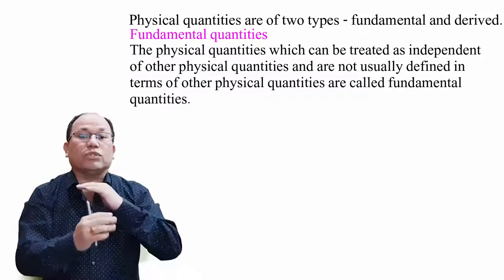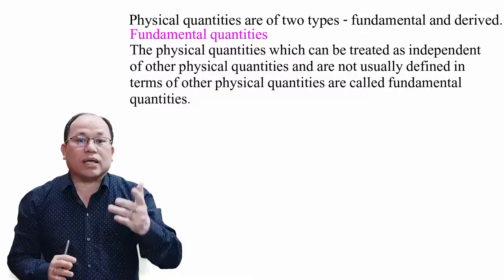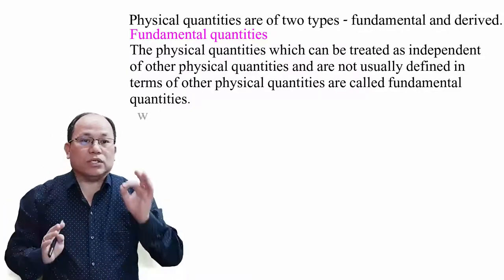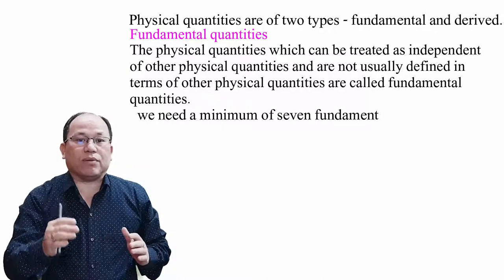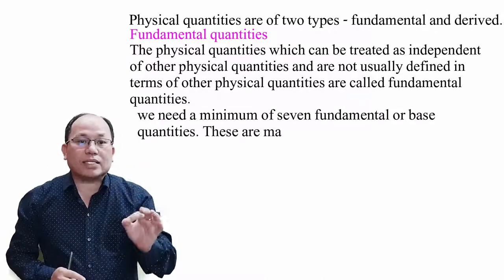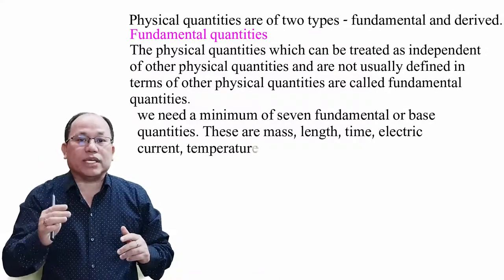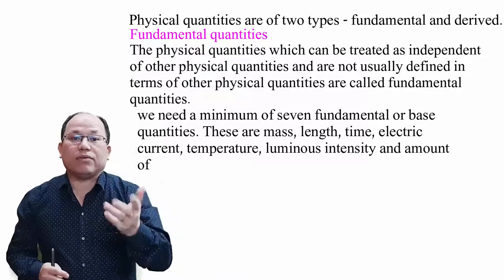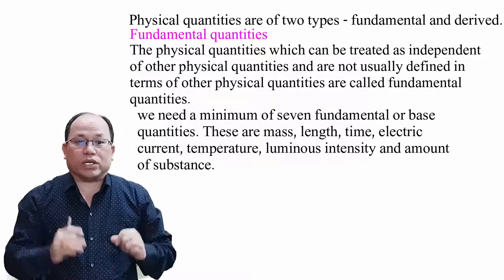Fundamental quantities are independent of others. We need a minimum of seven fundamental or base quantities. These are: mass, length, time, electric current, temperature, luminous intensity, and amount of substance. These are the seven primary or basic quantities.